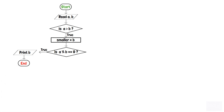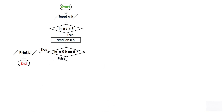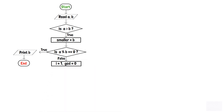But if the condition is false — that is, if a modulo b is not equal to 0 — then a process box is implemented in which two variables are declared: variable i is assigned to 1 and variable gcd is assigned to 0.